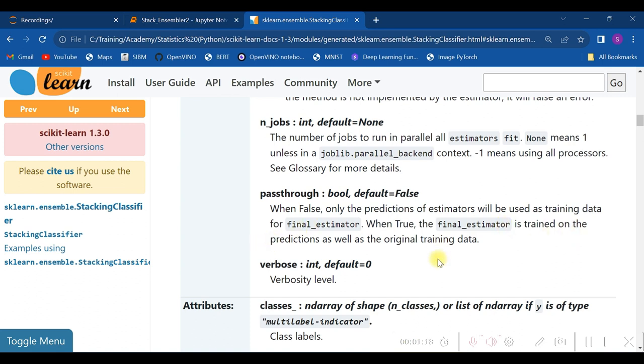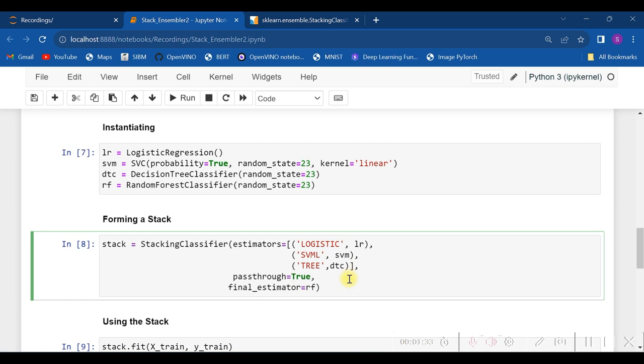That is in our context it's trained. So let's make a change by setting pass-through to true instead of false as it is by default, and let's rerun the whole code.